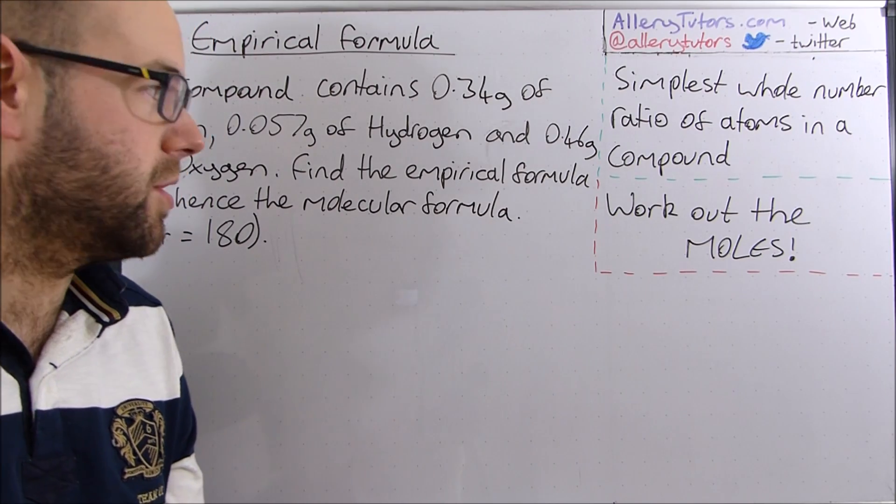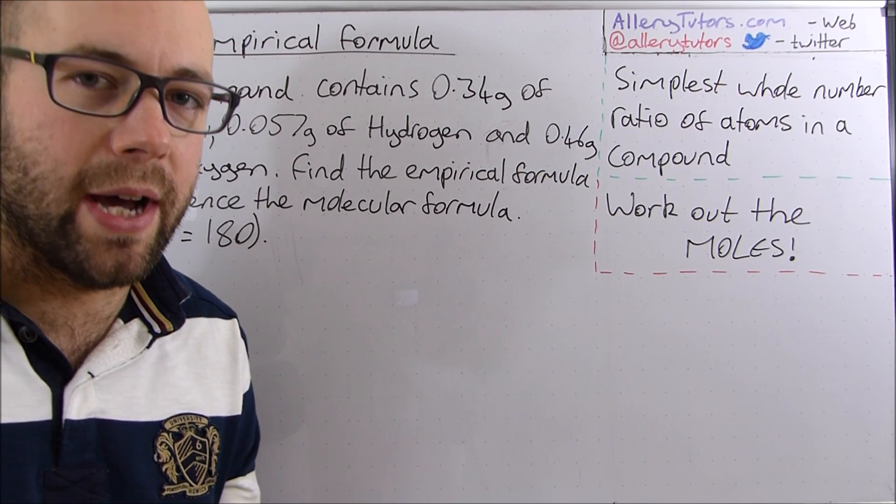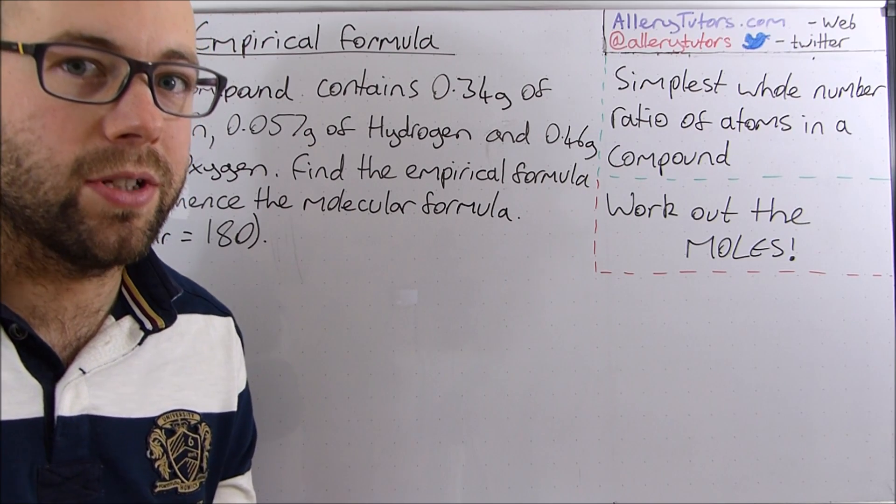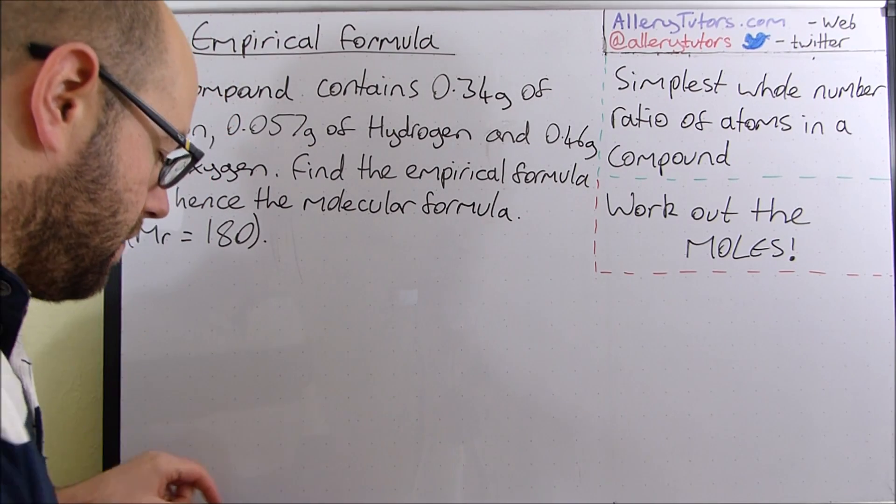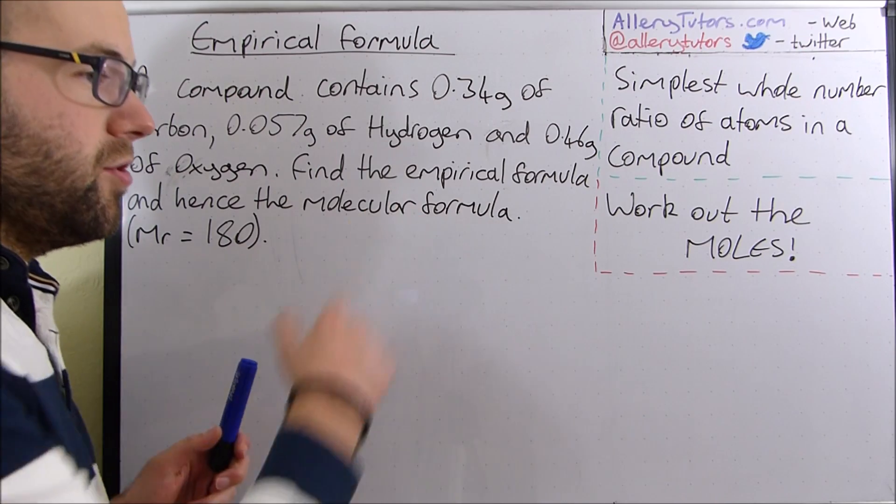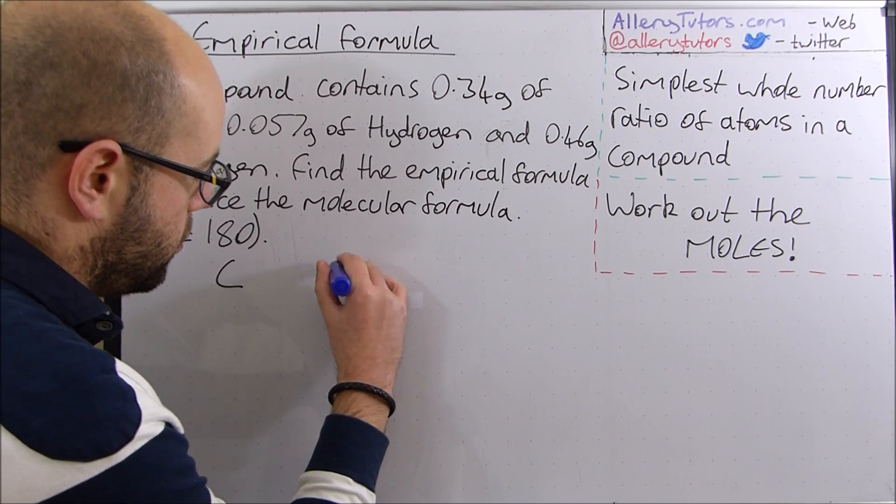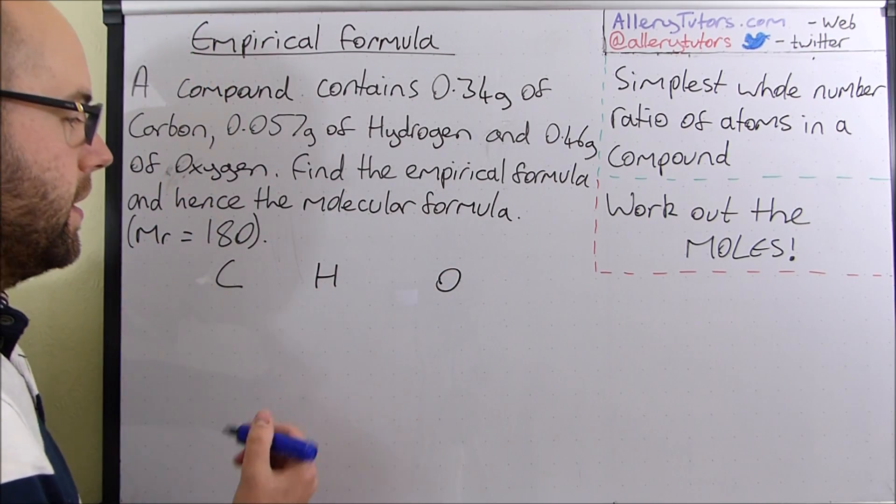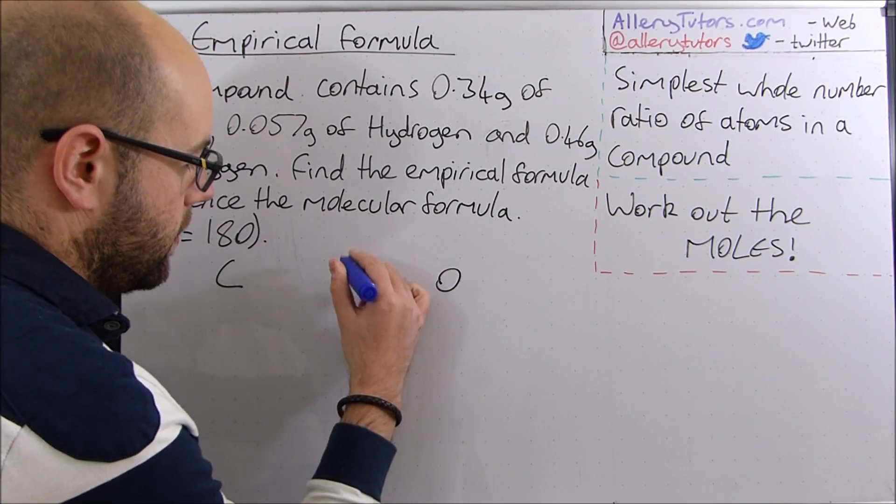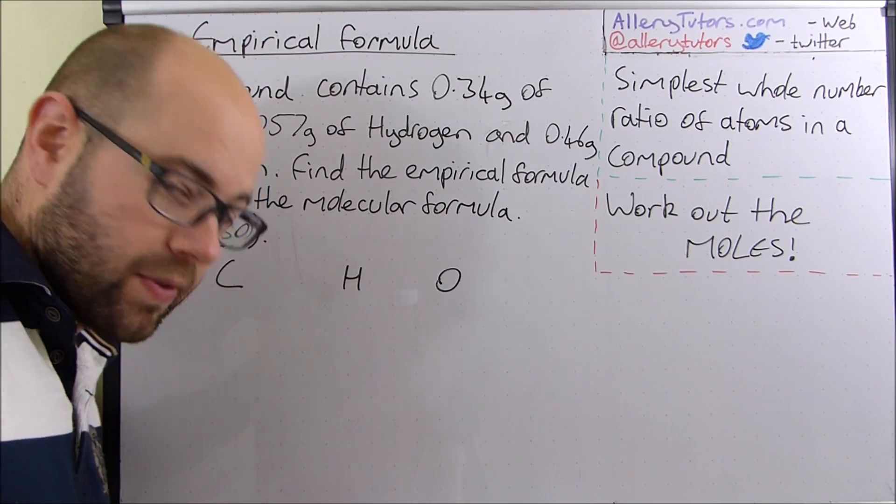All right so the first thing you have to do with the empirical formula is to put your headings of the elements that you've got in your compound. So the elements we have here are carbon, hydrogen and oxygen. So I'm going to put them here. I'm going to put carbon, hydrogen, oxygen. That's the first thing, that's our header.